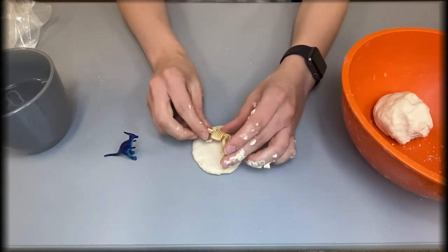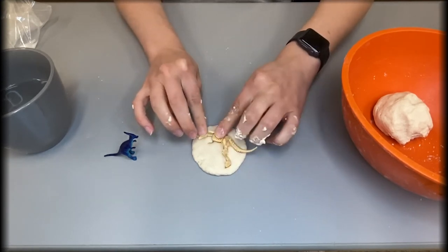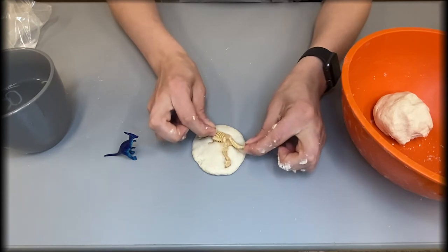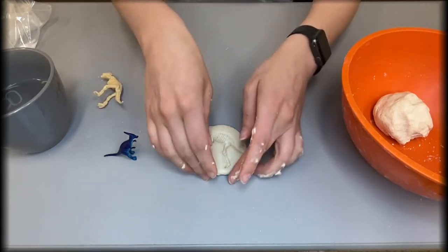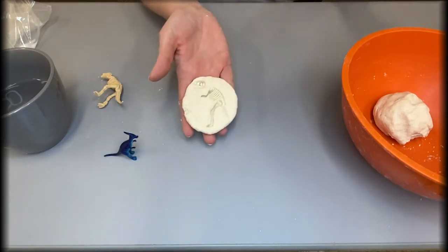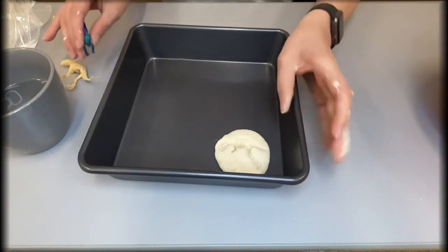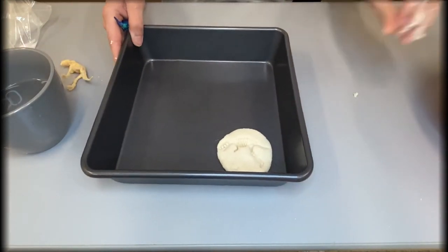Now take your plastic dinosaur and place it on top of the dough. And press it into the dough firmly and gently lift the dinosaur from the dough. You should be left with an imprint like this one. Once done, go ahead and place the cookie onto your baking sheet or baking pan.